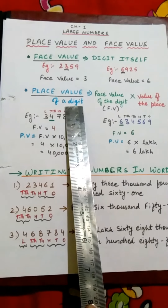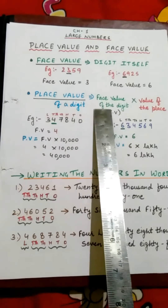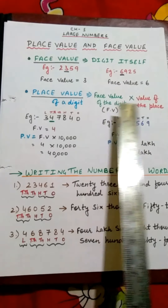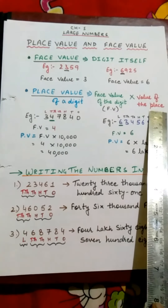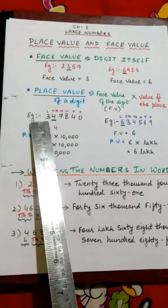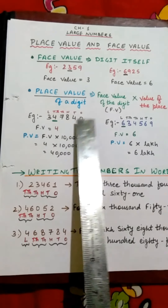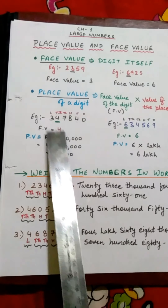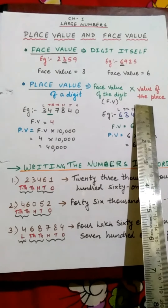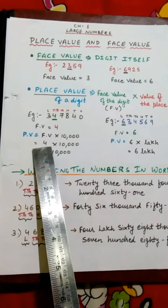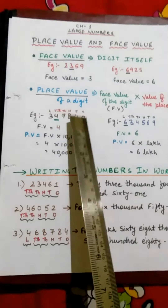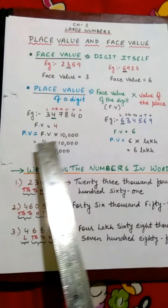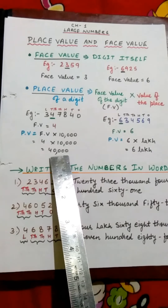Now we will discuss the place value of a digit. The place value of a digit is the face value of the digit multiplied by the value of the place. If you want to find the place value, you write the face value of that digit and the place where it is located in the number system. For example, the number is 3,47,840 and the underlined digit is 4. The face value of 4 is 4. And where is 4 located? It is in the Ten Thousands place — Ones, Tens, Hundreds, Thousands, Ten Thousands. So 4 into Ten Thousands equals 40,000. The place value of 4 is 40,000.